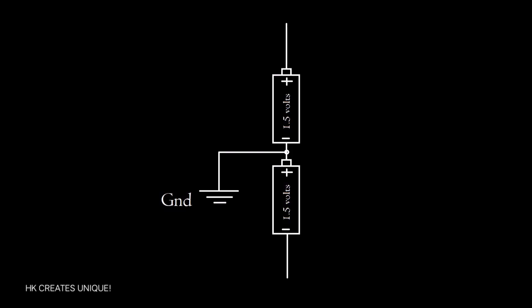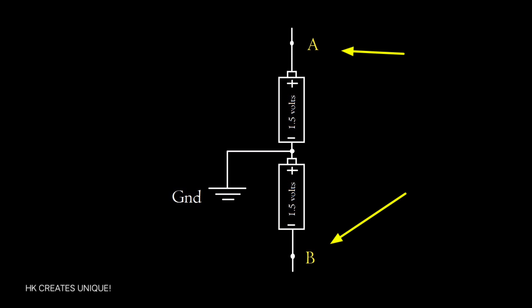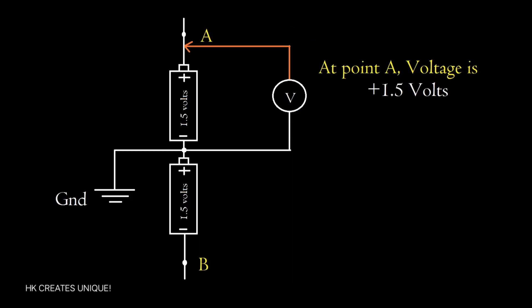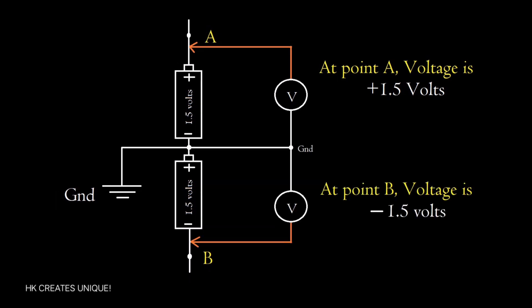In this diagram, two cells are connected in series and the ground terminal is this. Now tell me voltage at the point A and B. Voltage at point A is plus 1.5 volts and voltage at point B is minus 1.5 volts.